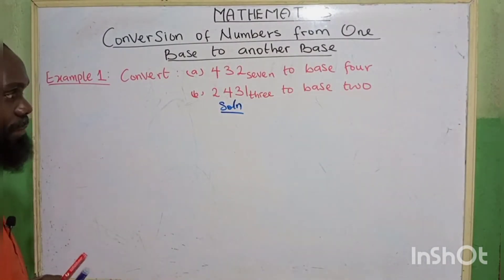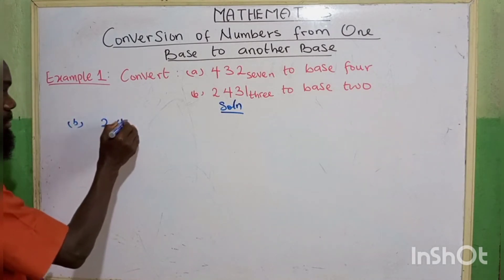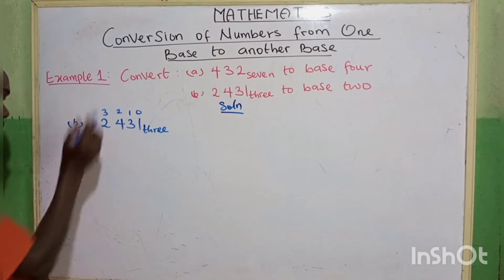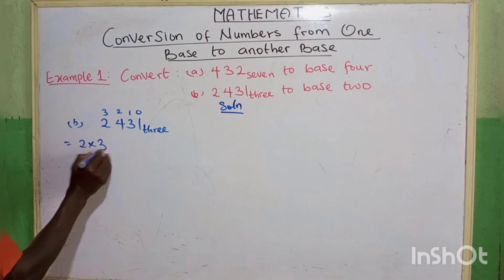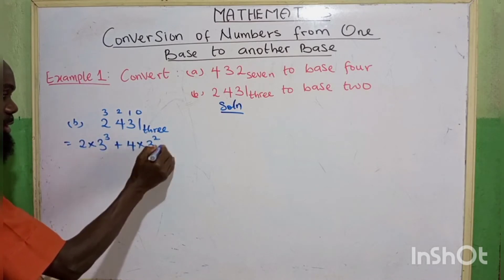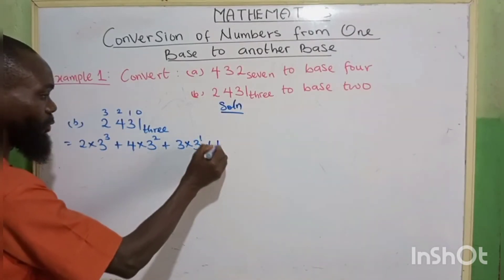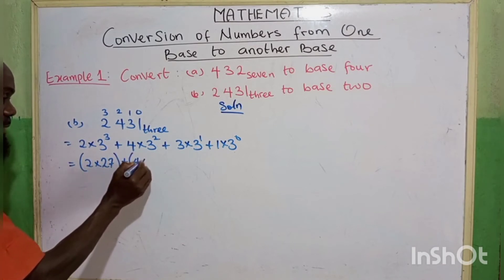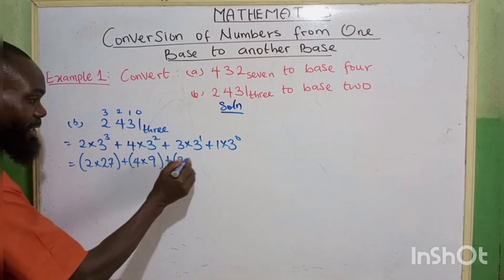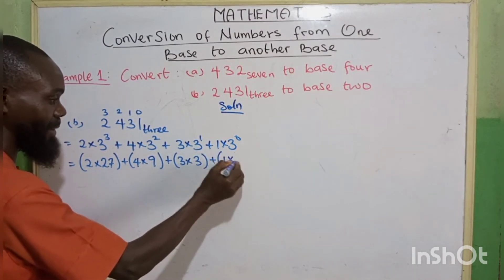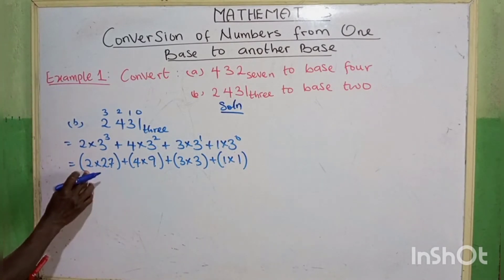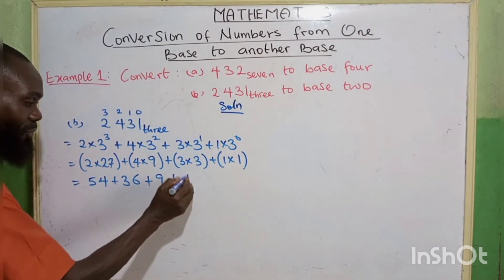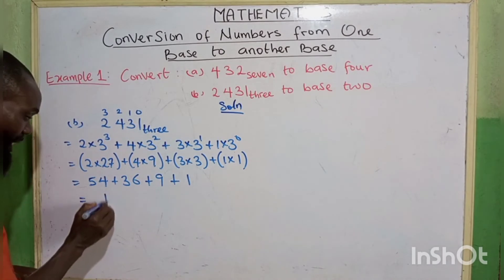The second question: 2431 base 3 to base 2. We label the digits as positions 3, 2, 1, 0. So we have 2 multiplied by 3 to the power 3, plus 4 multiplied by 3 to the power 2, plus 3 multiplied by 3 to the power 1, plus 1 multiplied by 3 to the power 0. That gives us 2 times 27, which is 54, plus 4 times 9, which is 36, plus 3 times 3, which is 9, plus 1 times 1, which is 1. When we sum everything together, we have 100 in base 10.